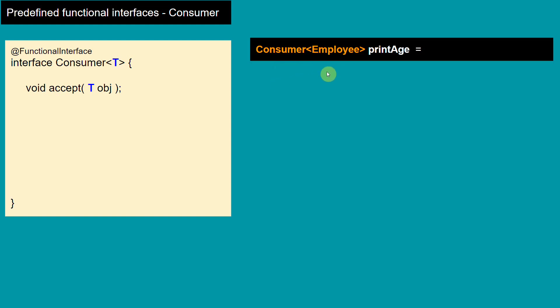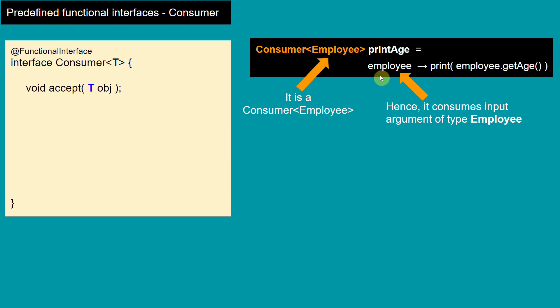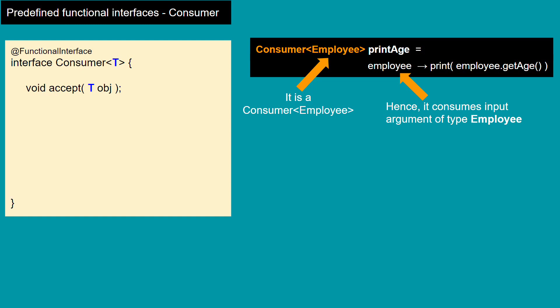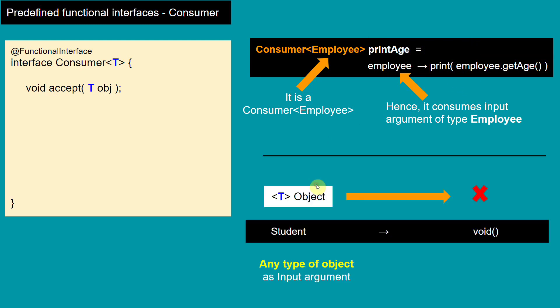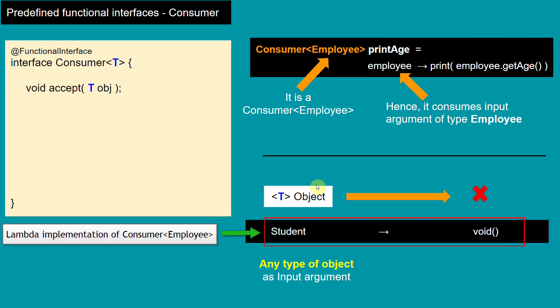Consumer takes input argument and if we define a Consumer of Employee, that means it takes Employee as an input argument and it does not return anything. It just prints using System.out.print — the return type of the print method is void, and that's why it's a valid Consumer because it takes an input argument as Employee and returns nothing. The lambda implementation takes any type of input argument but does not return anything — it just consumes the input argument, that's why it's called a Consumer.